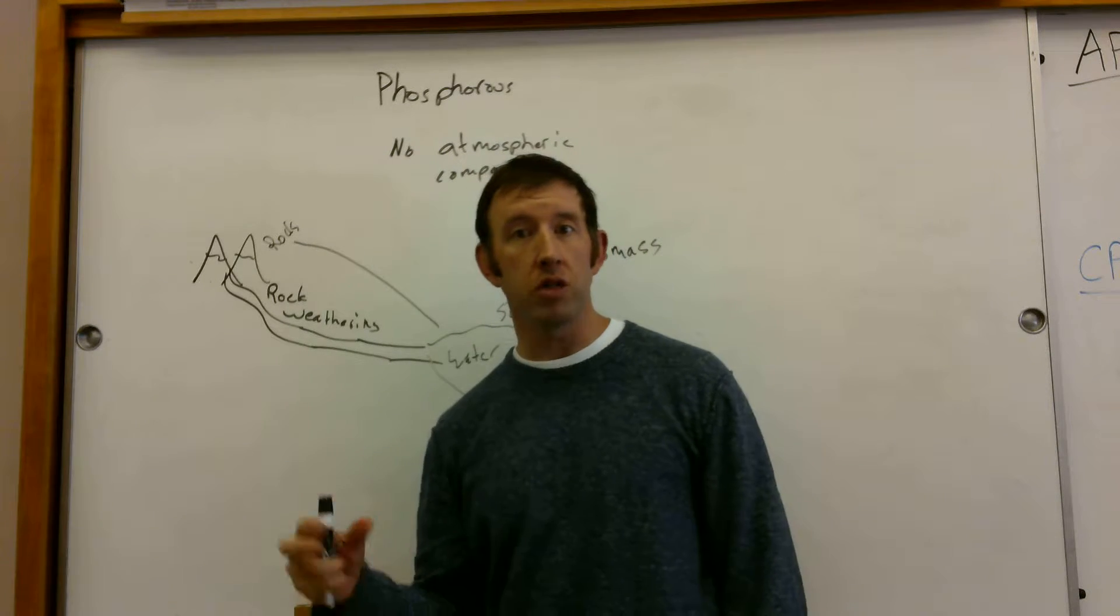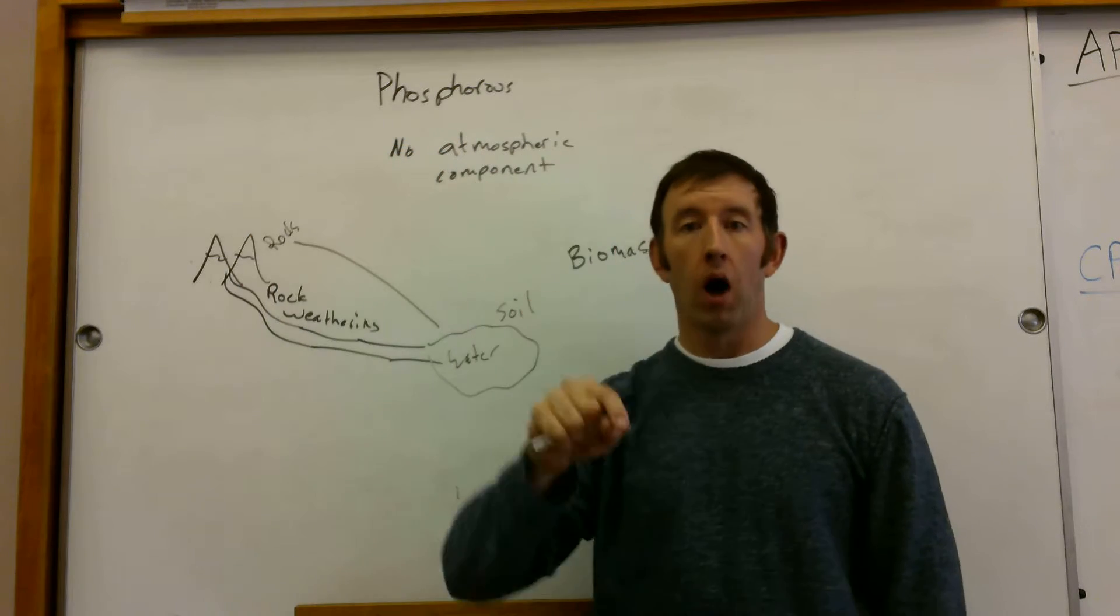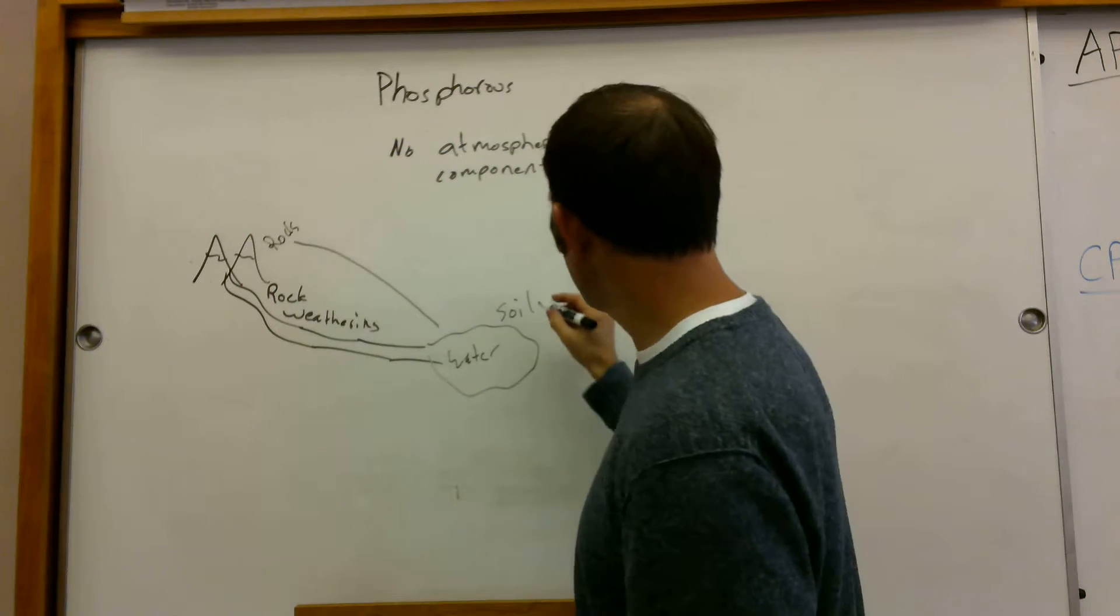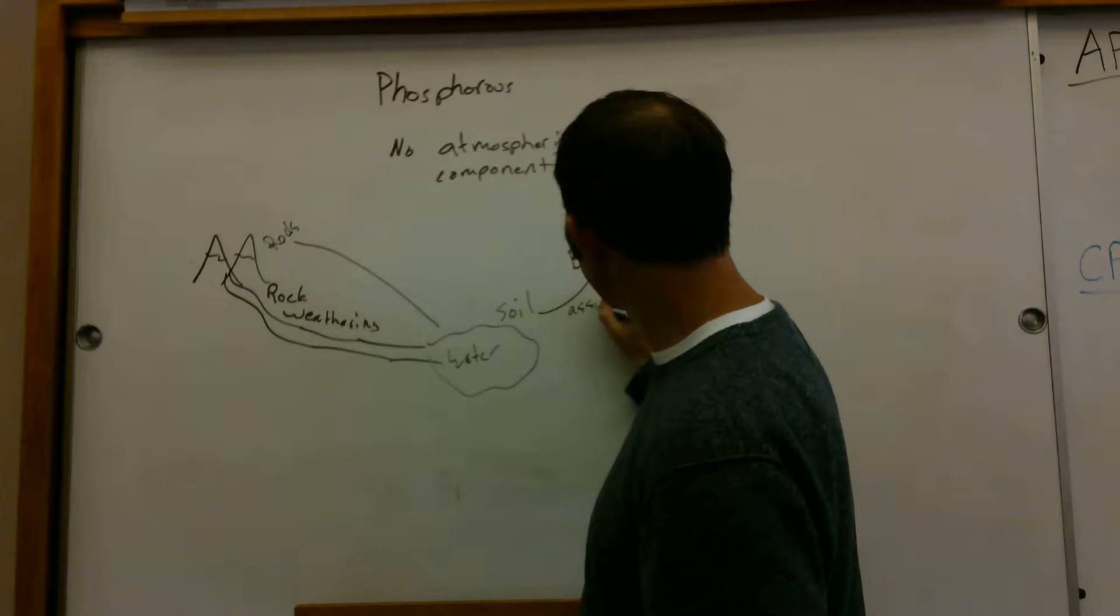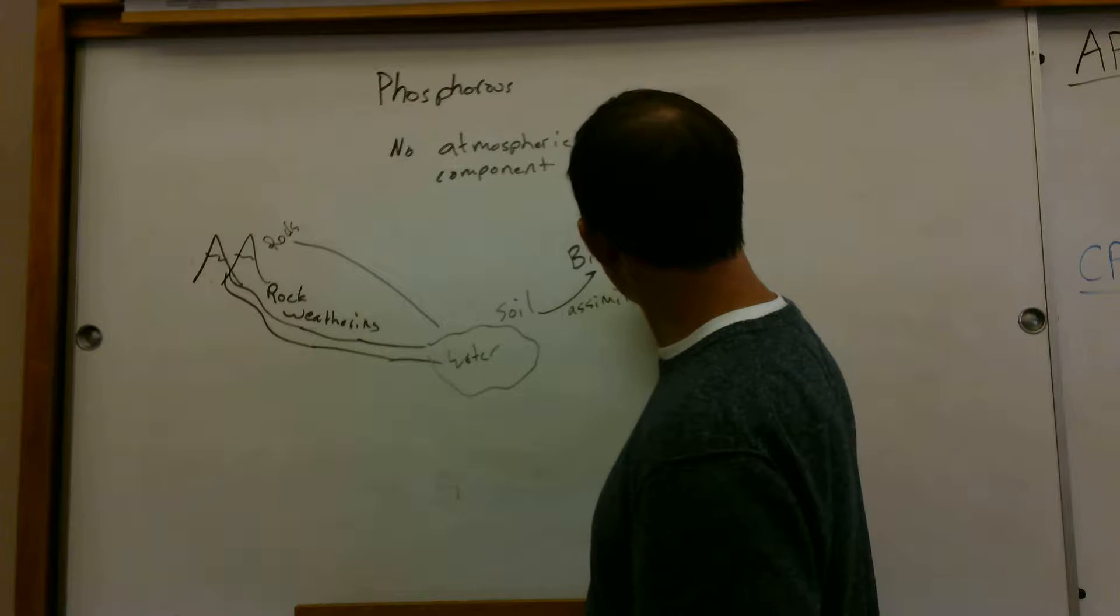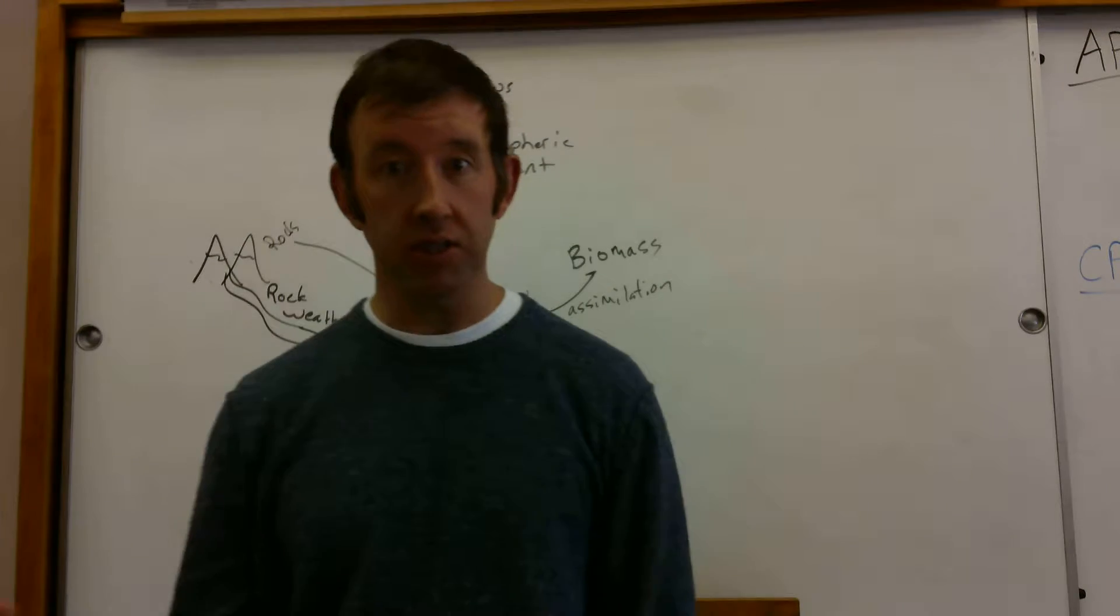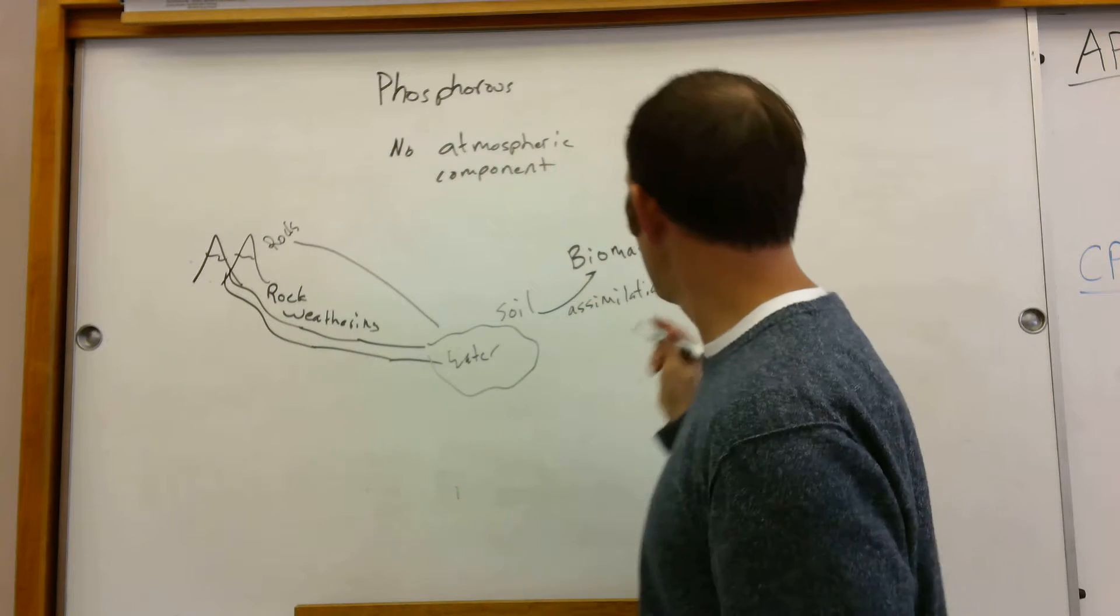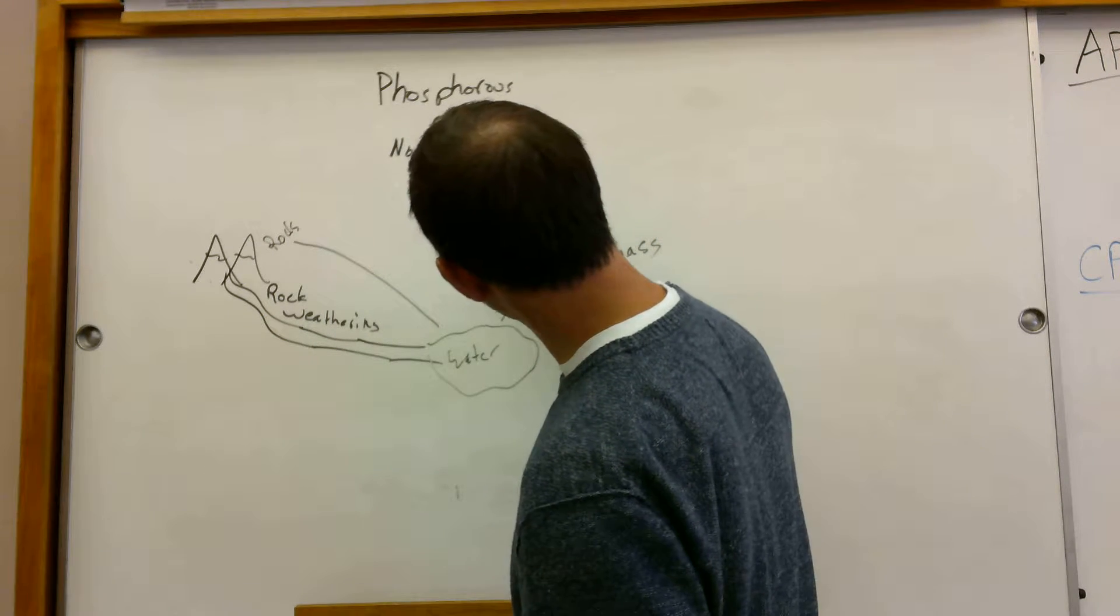Plants are really good at taking water-soluble nutrients out of the soil. So the phosphorus in the soil works its way into biomass through assimilation in much the same way as nitrogen does in its various forms. And then from biomass, it can work its way back to the soil through decomposition.